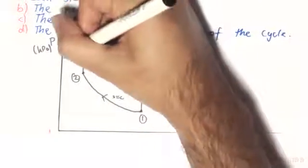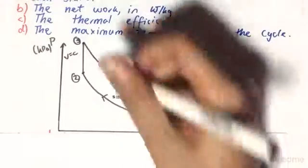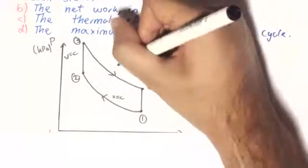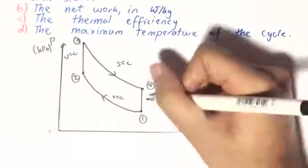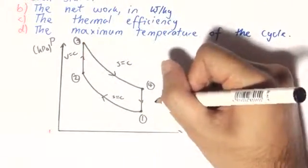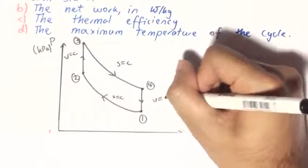Process 2 to 3 is isochoric, so volume is constant. Process 3 to 4 is another isentropic expansion, so S is constant. And finally, process 4-1 is an isochoric heat rejection.